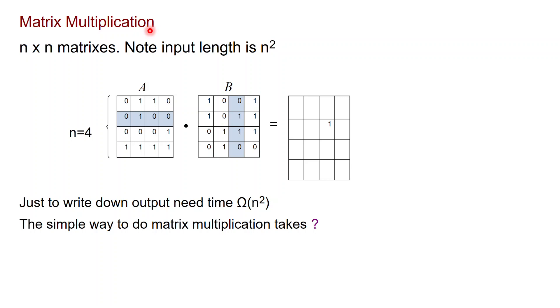The first is for the problem of matrix multiplication. Here the input are two n by n matrices, like here A and B, and we want to compute their product which is another n by n matrix. Note that the input length is n squared. However, it is common to parameterize this problem by the length of the side of the matrix n.